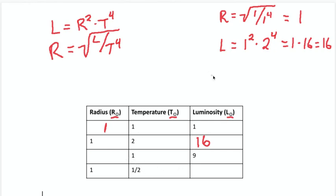Let's do the next one. I'm again solving for radius, so I'm going to use this version here. Radius equals the square root of luminosity nine divided by the temperature to the fourth, one to the power of four. One to the power of four is just one. Nine divided by one is just nine, so this is the square root of nine. Square root of nine is three. So the radius of this star would be three solar radii.